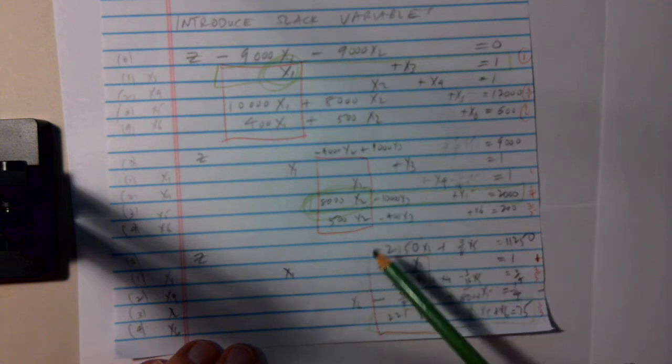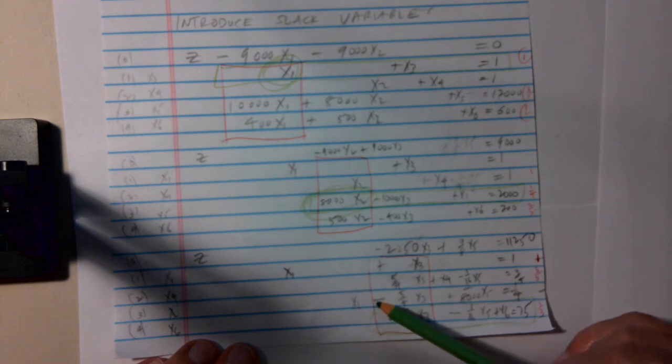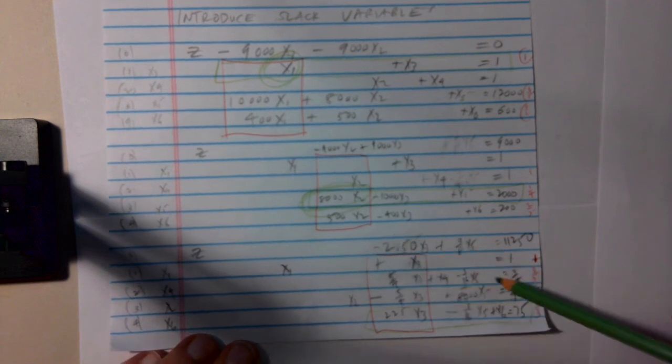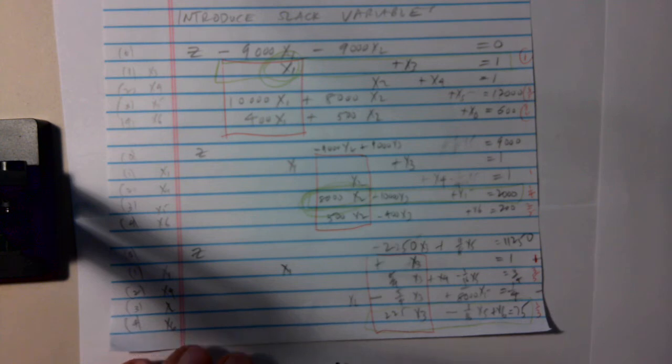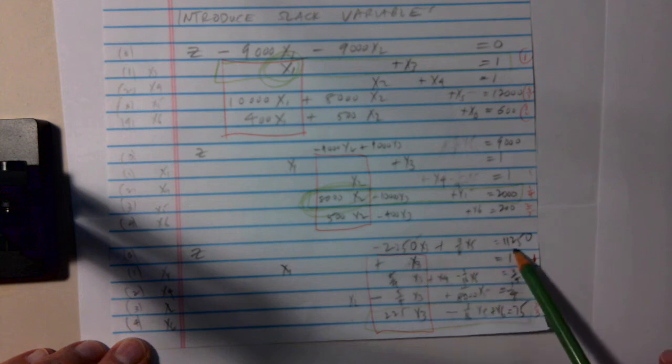And then I subtract multiples of this equation from each of these three equations to eliminate the X2s. And when I do that, these are the equations that I get. And you see now, the basic variables are X1, X2, X4, X6. And Z, when I solve for those variables, Z is 11,250. It's greater than the 9,000 I had before.